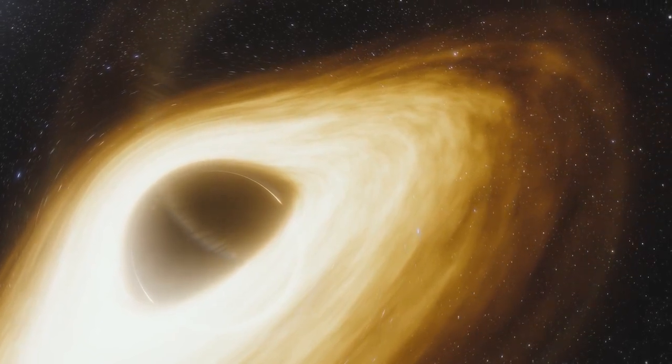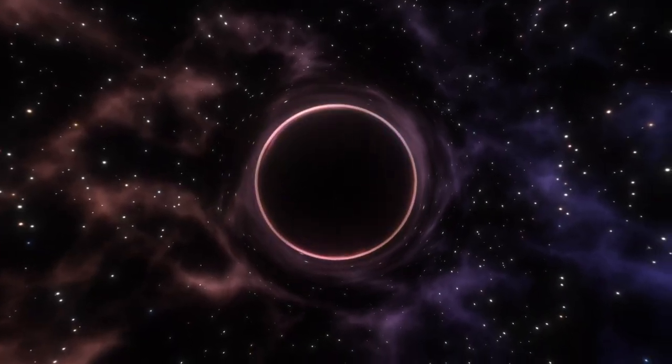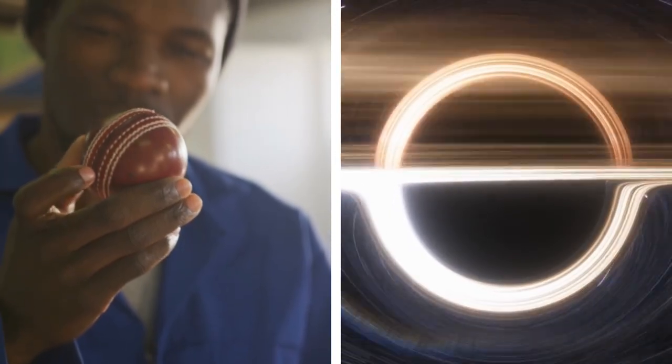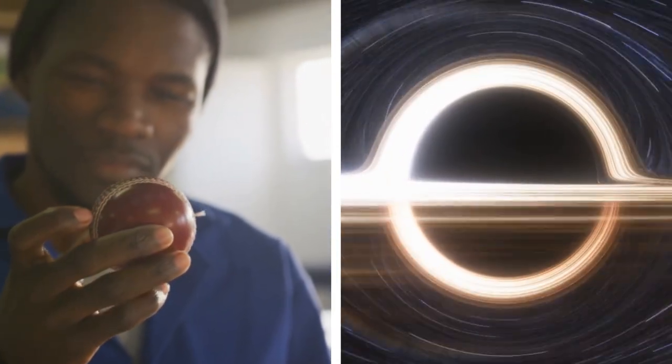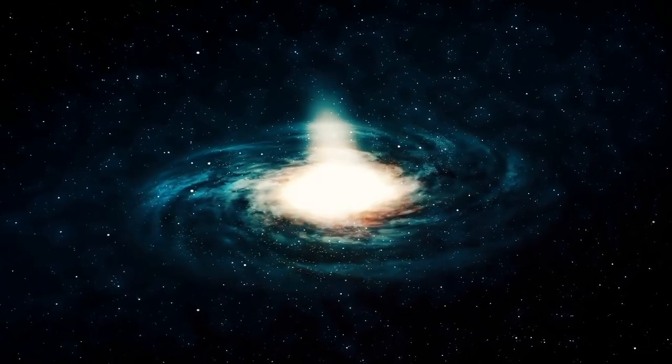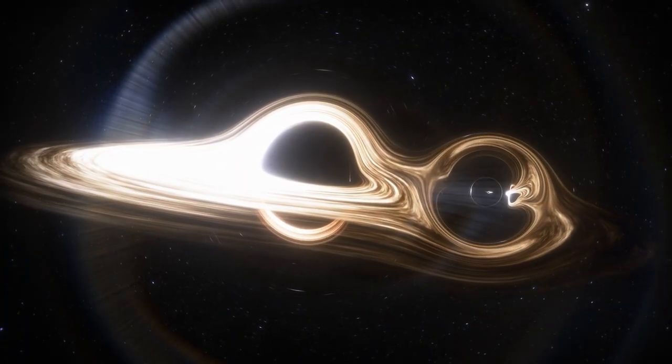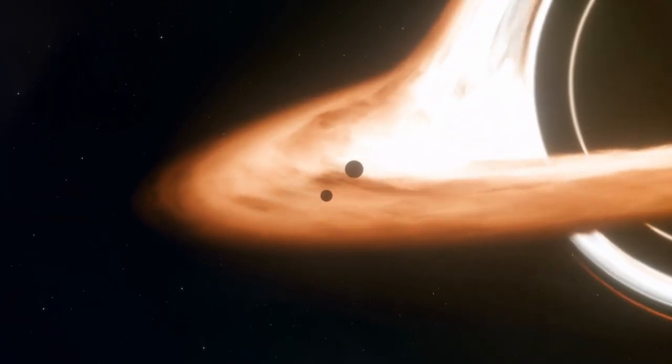A black hole is, by definition, a place in space where gravity pulls so much that even light can't escape it. In principle, any object can be made into a black hole by squeezing it into a tiny enough volume. Under such conditions, the object proceeds to collapse under its own weight, crushing itself down to nothingness. But the object's mass and gravity remain behind in the form of an extreme space and time anomaly, which is in turn considered a black hole.